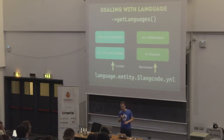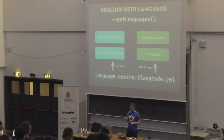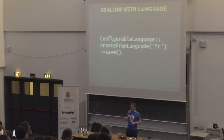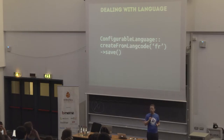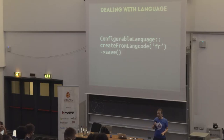These languages are stored in the configuration system, so when you export your configuration you'll see language.entity.langcode.yaml files. The difference between built-in and regular languages is that built-in ones are locked — they have a locked property and cannot be removed or deleted, because the system depends on those two at different places. The Configurable Language Manager has methods like createFromLangcode — very easy to create a new language on your site, giving you a language object that you save, creating a configuration object stored in your configuration system and deployable.